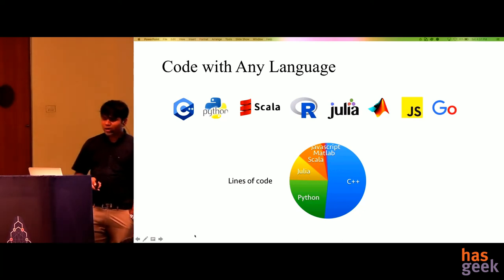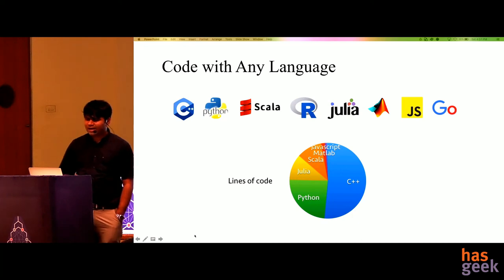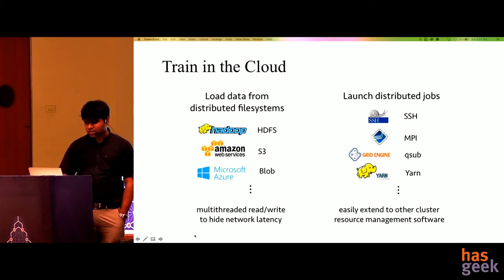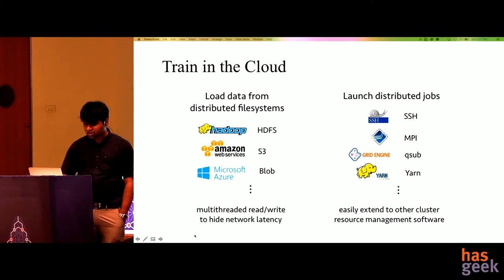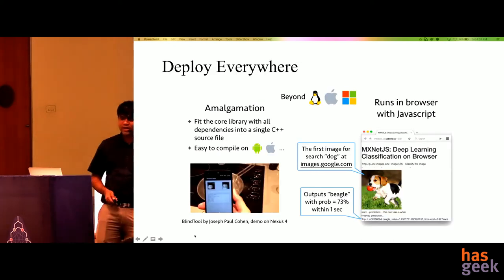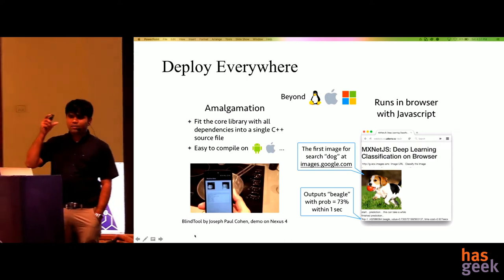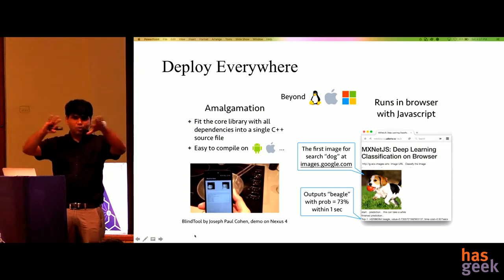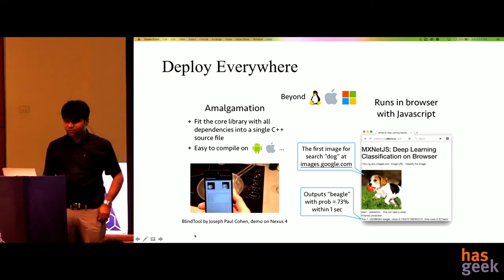With MXNet, you can do programming using Python, Scala, R, Julia, Matlab, JavaScript, or Go — so you don't have to change your programming language. It is also open source, so you can run it on Amazon, Azure, or at home. It is extremely portable. You can compile an MXNet program into a single lightweight file with no separate framework and model files, which can be run on a mobile phone or any embedded device. Models can be so lightweight that they run inside browsers.